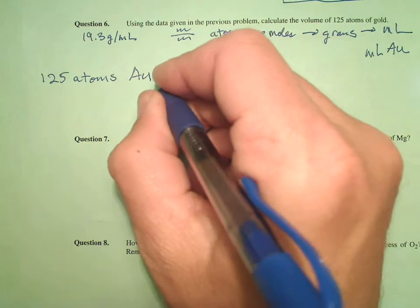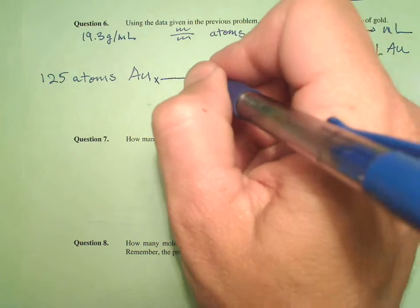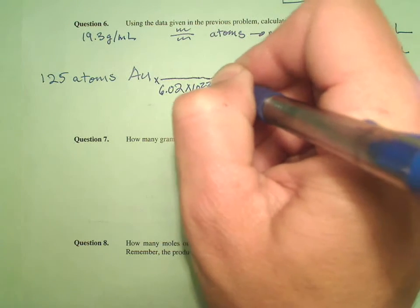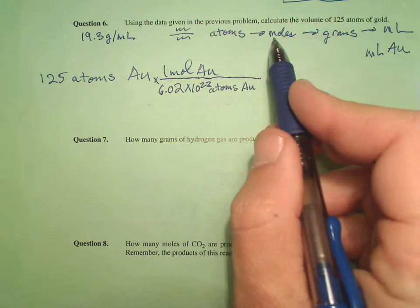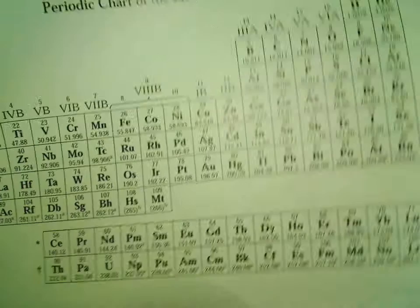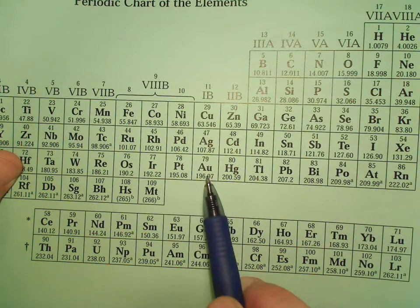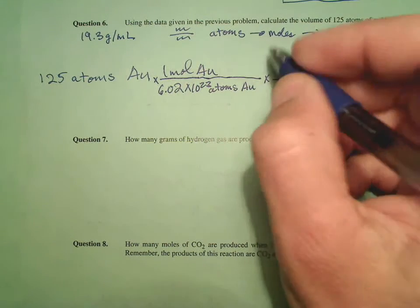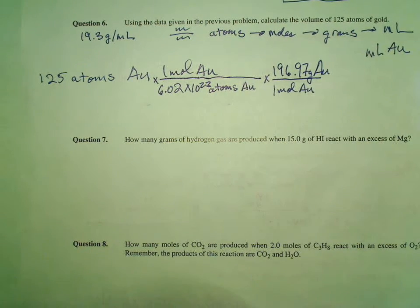So we've got 125 atoms of gold — we expect a very small number because atoms are teeny tiny things. We know Avogadro's number: 6.02 times 10 to the 23rd atoms of gold is one mole of gold. Now we have to go to grams. We're talking gold, so from our periodic table, the molar mass is 196.97 — one mole of gold is 196.97 grams of gold.